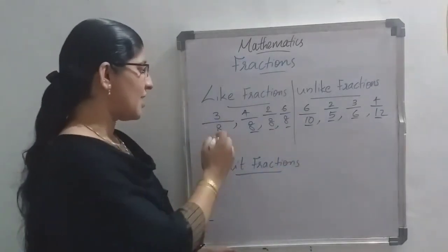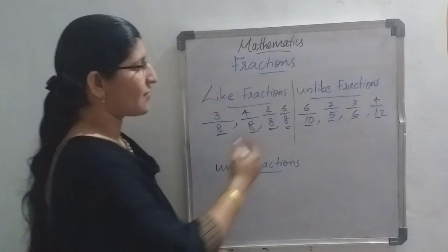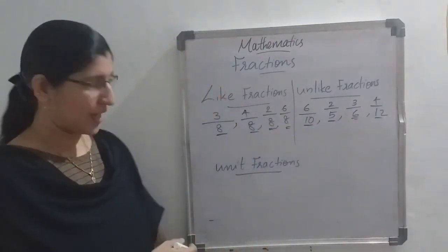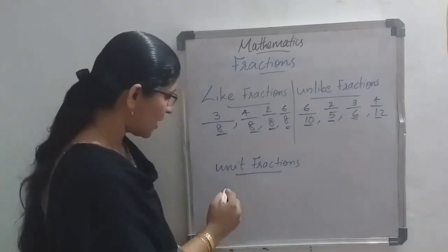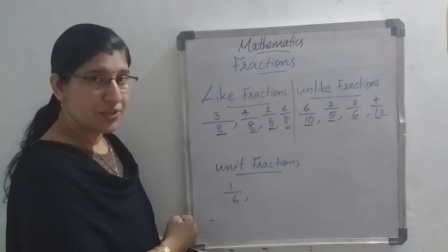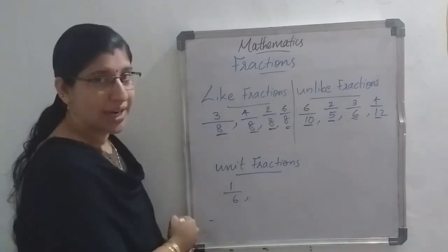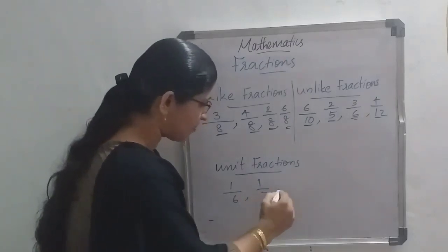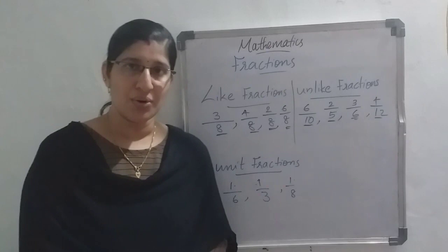So, like fractions means the fractions which have same denominators, and unlike fractions means the fractions which have different denominators. Next is unit fraction. Unit fraction means the fraction which has numerator equal to 1. Examples are 1 by 3, 1 by 6, 1 by 8 — all the numerators are 1. This type is called unit fraction.